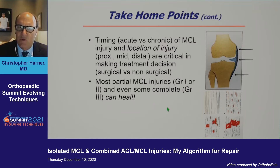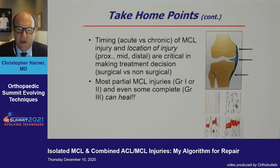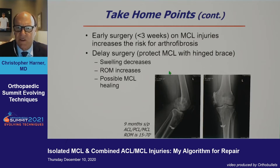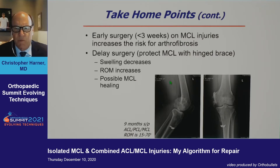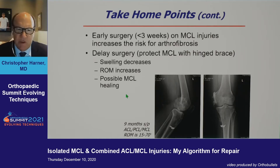The timing — acute versus chronic — of MCL injury and the location of the tear (proximal, mid, distal) are critical in making treatment decisions: surgical versus non-surgical. Most partial MCL injuries, grade one or two, and even some complete grade three, can heal. Early surgery less than three weeks on MCL injuries increases the risk for arthrofibrosis — a terrible complication. When I can, I delay surgery to let swelling come down, range of motion increase, and possibly allow the MCL to heal.